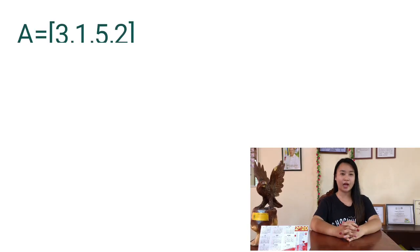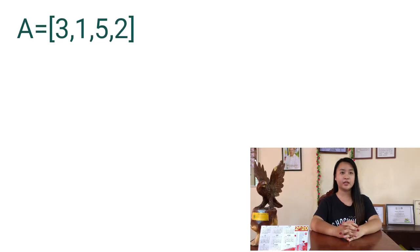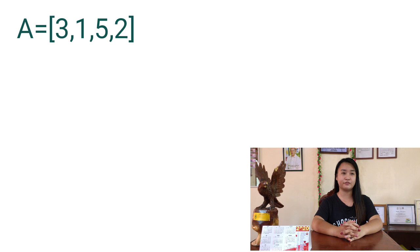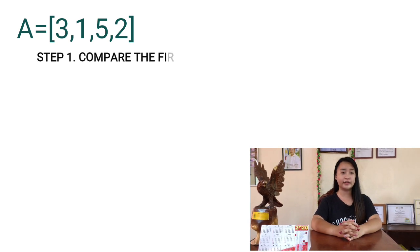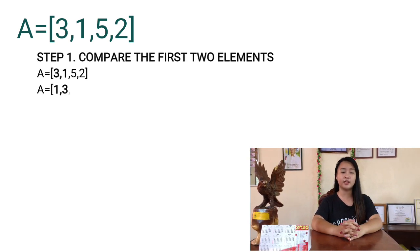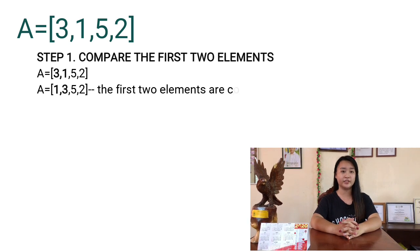Let's take the following array: A = [3, 1, 5]. Step 1: [1, 3, 5, 2]. The first two elements, 1 and 3, are compared and swapped.